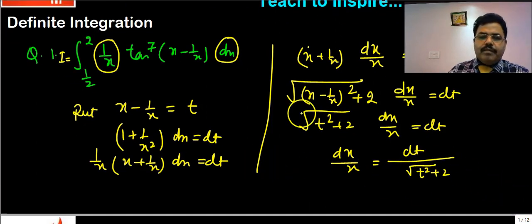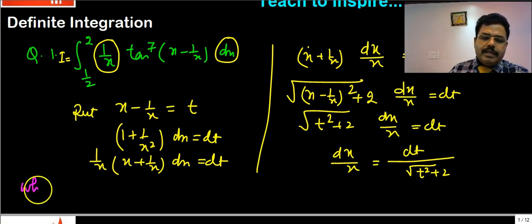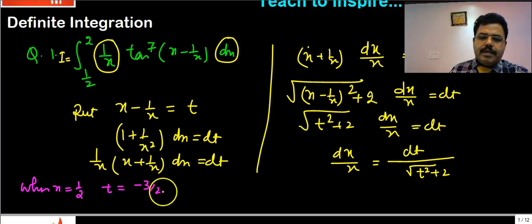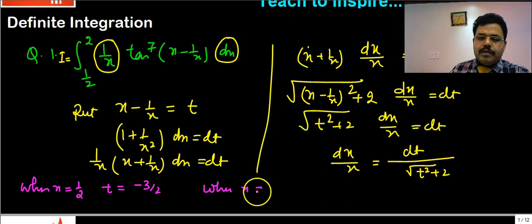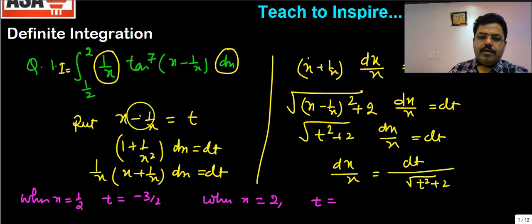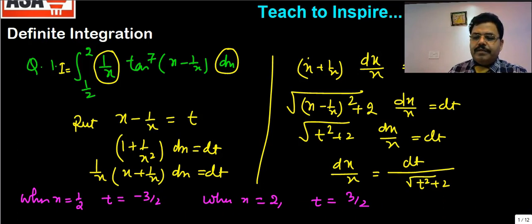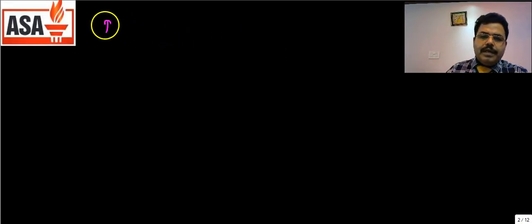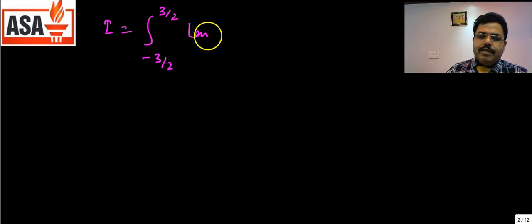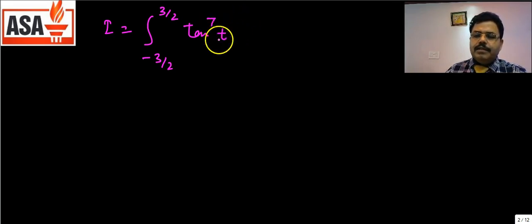Now let us find the new limits. When x = 1/2, t = 1/2 − 2 = −3/2. When x = 2, t = 2 − 1/2 = 3/2. So the limit changes from −3/2 to 3/2. The integration now becomes the integral from −3/2 to 3/2 of tan⁷(t).